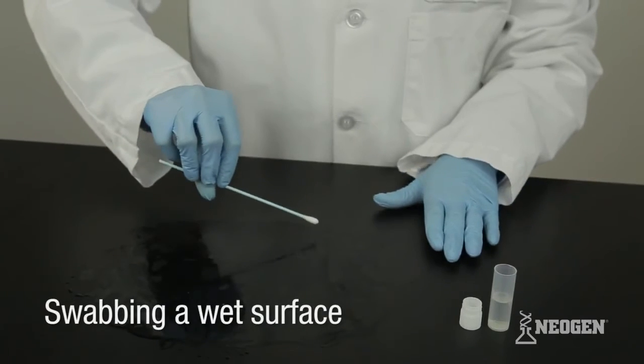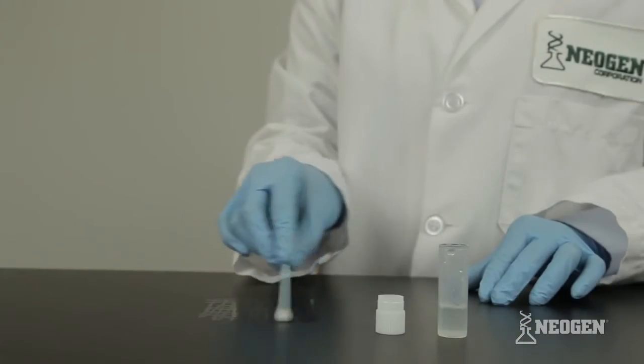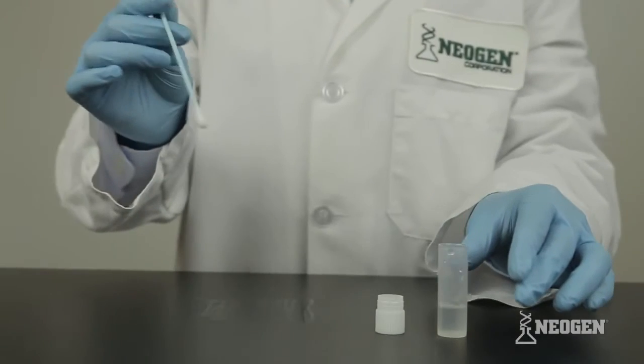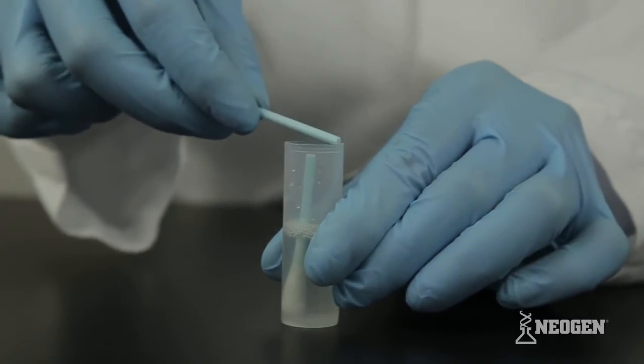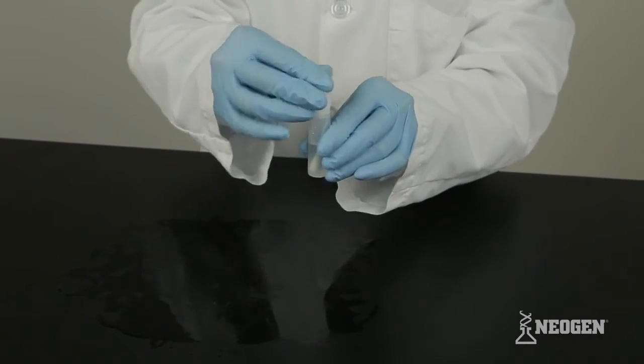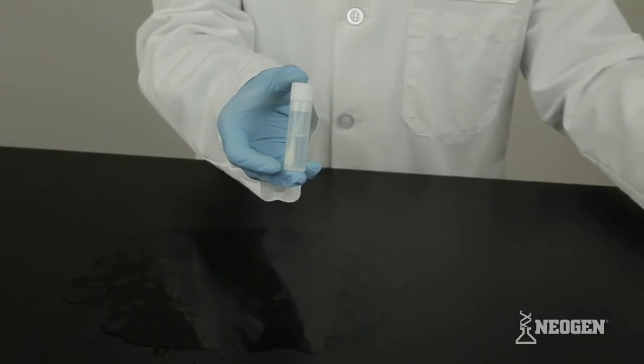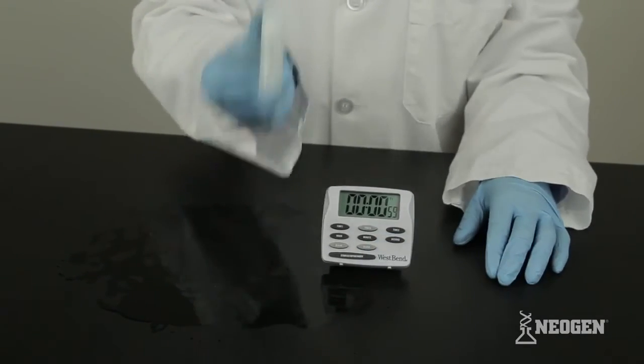If swabbing a wet surface, do not moisten the swab prior to use. Place the swab into the sample tube that contains the extraction buffer, then carefully break off the moistened end at the pre-scored mark so that it remains in the tube. Secure the sample tube's cap. Make sure that the stem does not prevent the tube from being properly sealed. Shake for one minute.